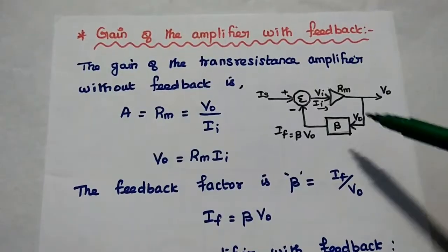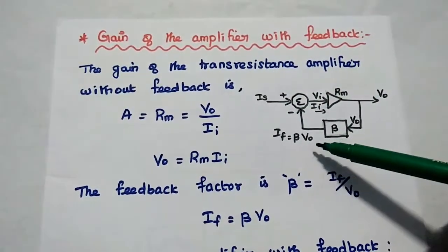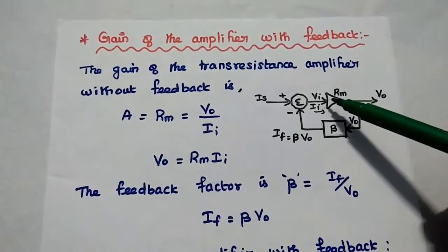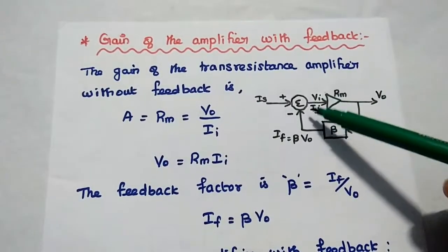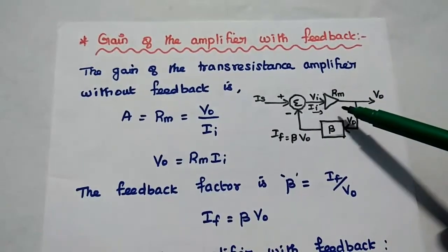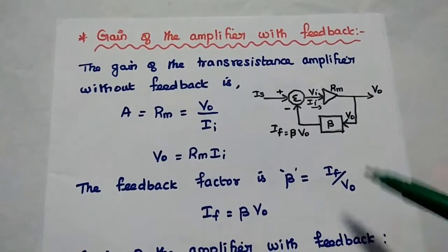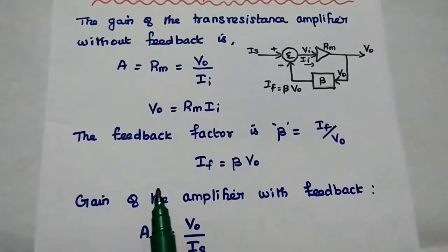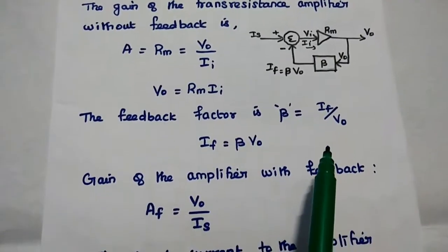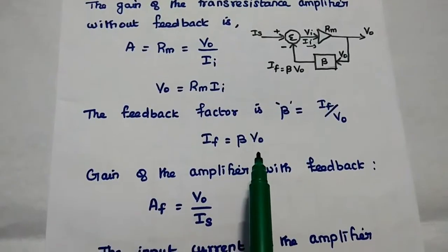This is the simplified diagram. IS is the source signal, and IF is the feedback signal from the feedback network. VI and II are the voltage and current for this amplifier, and VO is the output voltage. The feedback factor beta equals IF divided by VO, so the feedback current signal IF equals beta into VO.